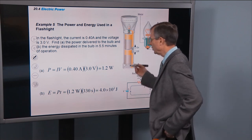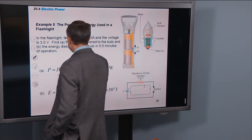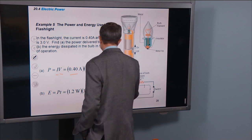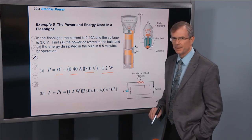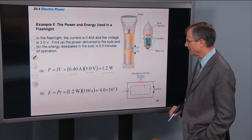So, power dissipated, that's totally easy. We know the current, we know the voltage. There's the current, there's the voltage. So it's 1.2 watts of power.